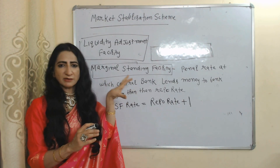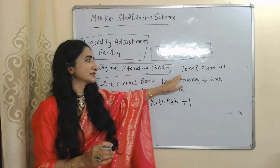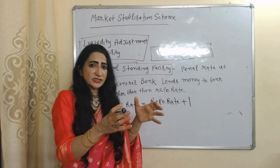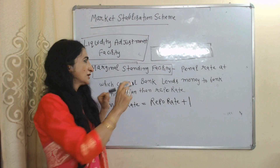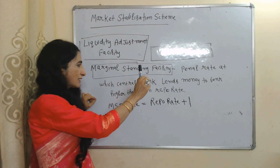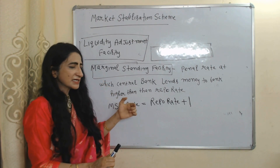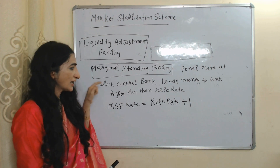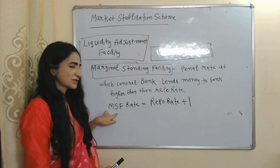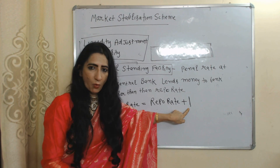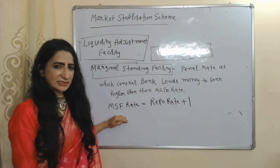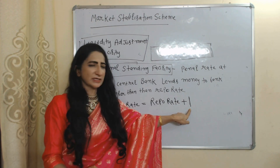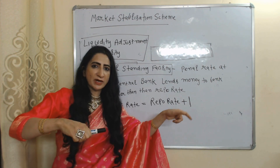The next is Marginal Standing Facility (MSF). MSF is a penal rate — meaning a penalty or extra charge which the central bank takes from commercial banks. MSF is the penal rate at which the central bank lends money to commercial banks, and it is higher than the repo rate. MSF rate = repo rate plus 1%. This 1% is the extra charge or penalty imposed by the central bank on commercial banks.